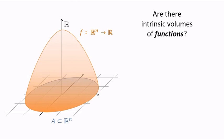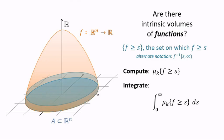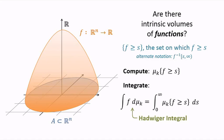For any s in the range of f, we can consider the set on which f is at least s, and we can compute the intrinsic volume mu k of this set. We can then integrate these values over the range of f. This gives a notion of the k-dimensional size of f, which we call a Hadwiger integral with respect to mu k.